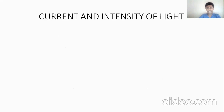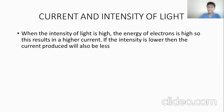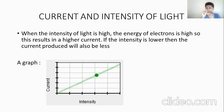Current and intensity of light. What does current have to do with intensity of light? When the intensity of light is high, the energy of electrons is high, which results in a higher current. If the intensity is lower, then the current produced will also be less. A graph states this — you can see that when intensity is high, the current is high.